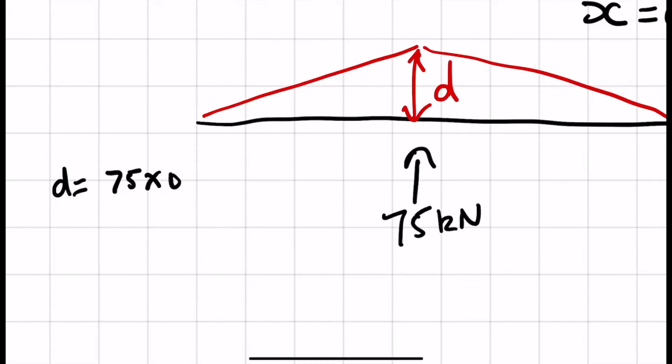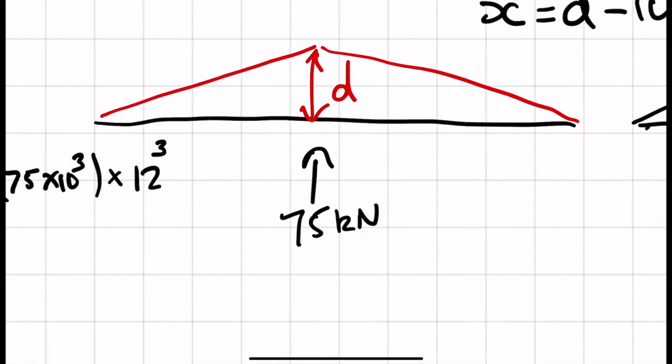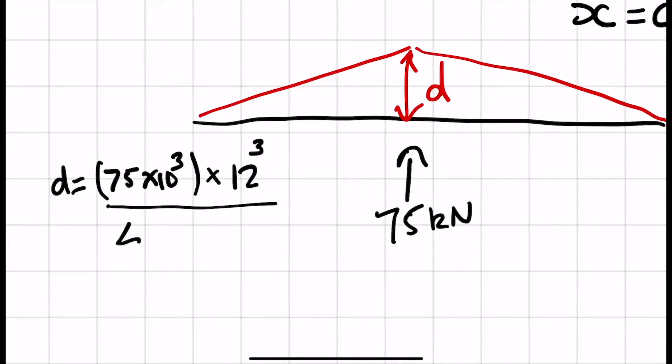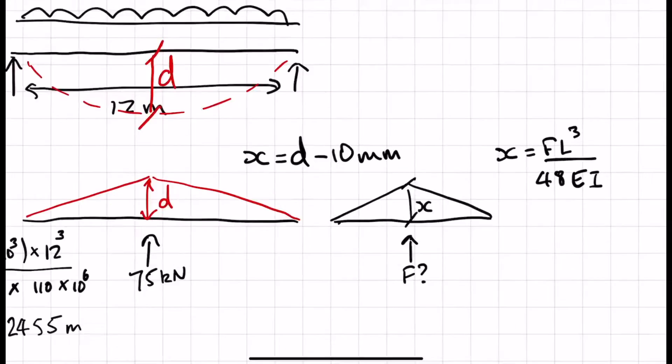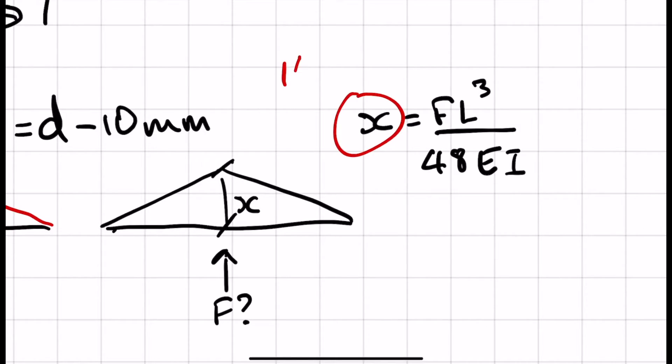So let's go back to here. So we had D is equal to PL cubed over 48 EI. So 75 times 10 to the 3 times 12 cubed. Remember, we're going over the span from A to C rather than any single span in between, over 48 times 110 times 10 to the sixth. So D was equal to 0.0245 meters, or 24.55 millimeters was the deflection.